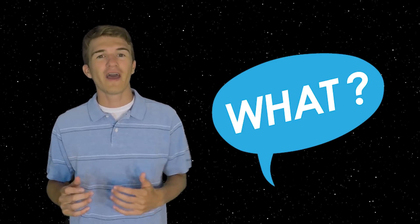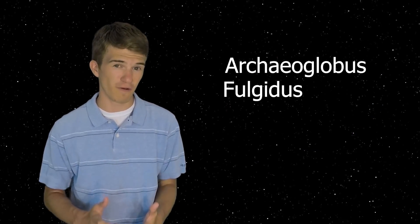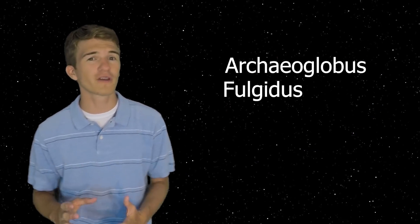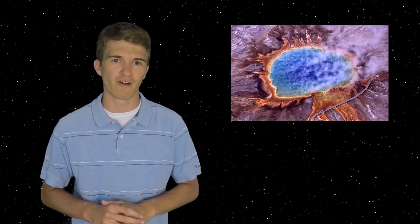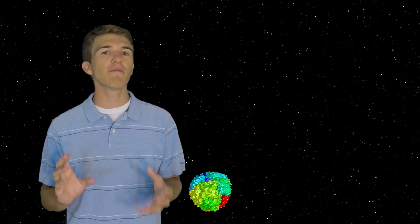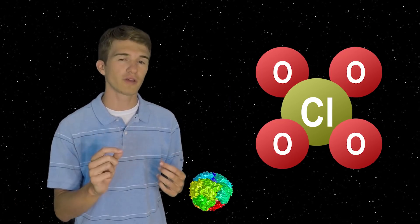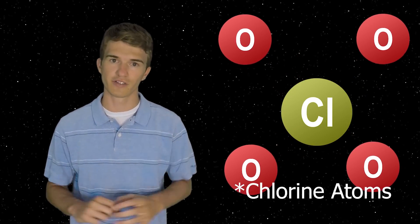First of all, Archaeoglobus fulgidus is an extremophile, which is a type of organism roughly the size of a bacteria and are found here on Earth in extreme environments such as high acidity, high temperatures, or strange chemical compounds in the environment. This organism, in particular, is capable of taking perchlorate molecules and separating them into smaller chloride molecules and oxygen gas.